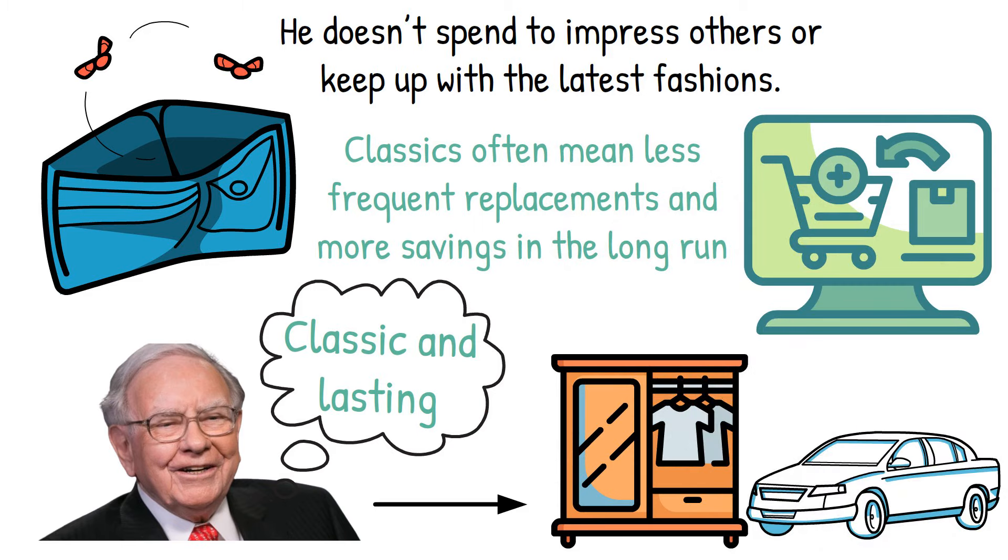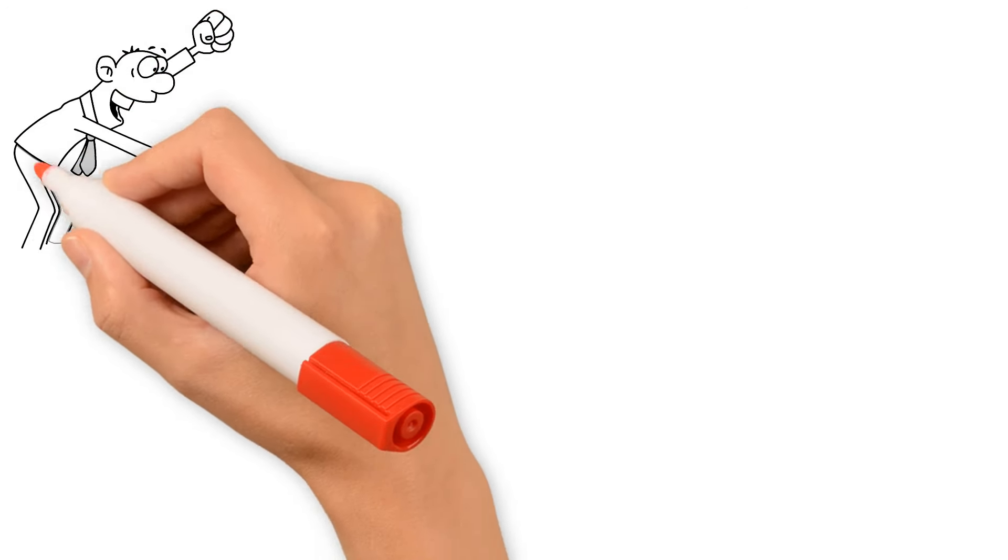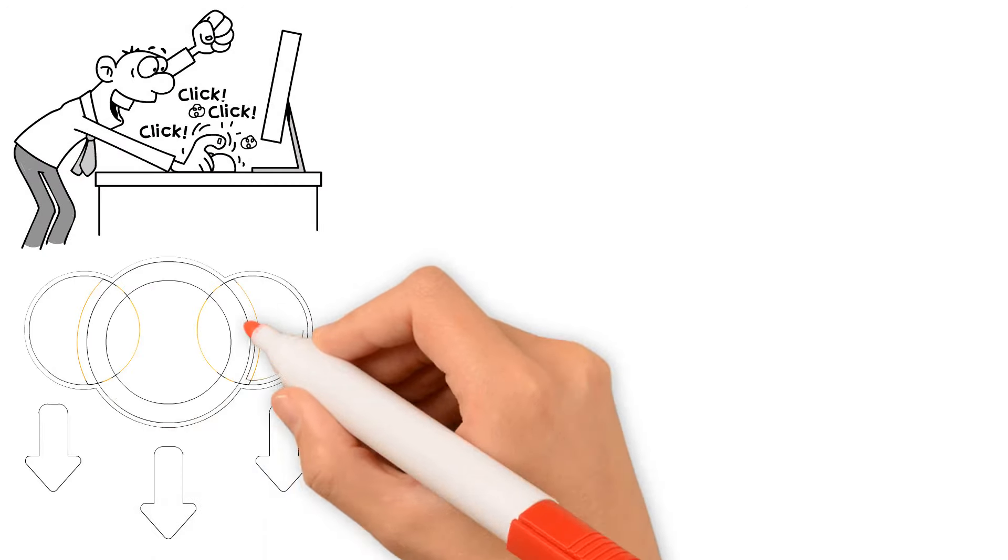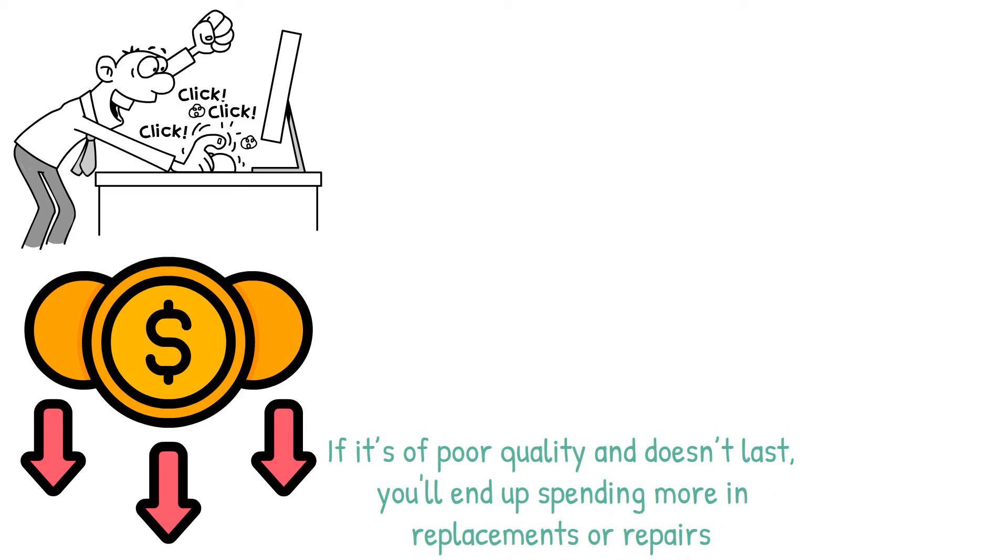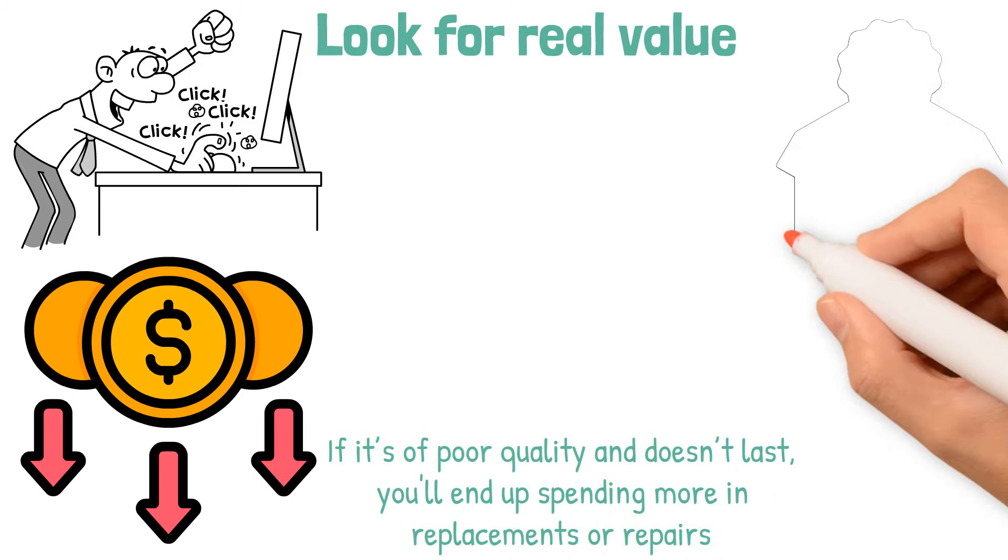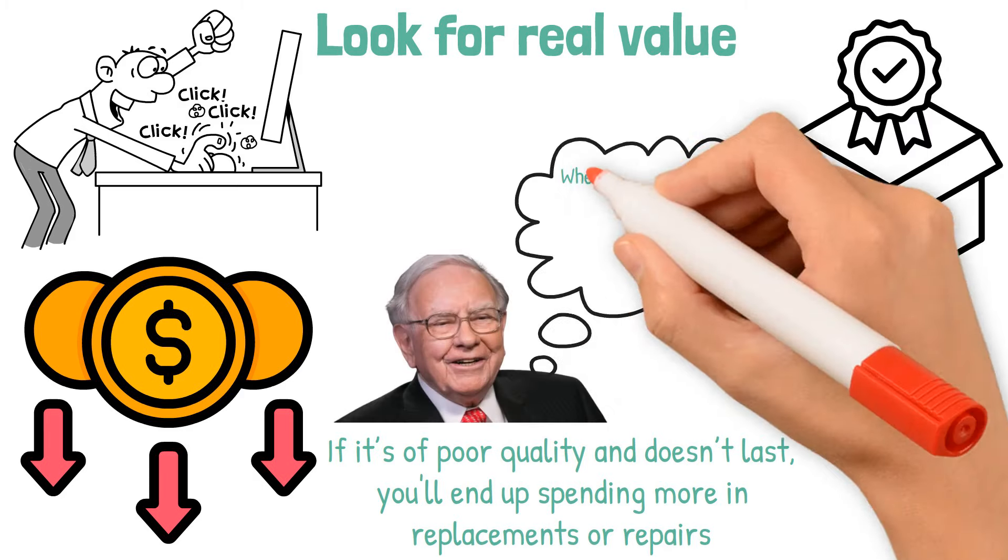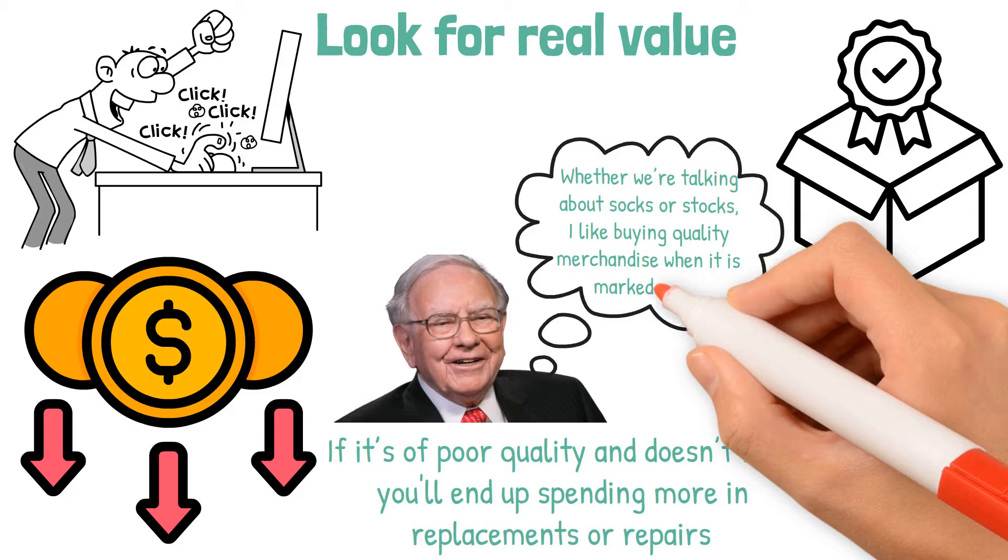The next invaluable advice for frugal living is prioritize value over price. It's easy to get tempted by low prices, but cheap can often lead to more expenses down the line. An item with a low price tag might seem like a good deal, but if it's of poor quality and doesn't last, you'll end up spending more in replacements or repairs. Buffett's strategy is to look for real value, that sweet spot where quality and price meet. Buffett succinctly puts it, whether we're talking about socks or stocks, I like buying quality merchandise when it is marked down.